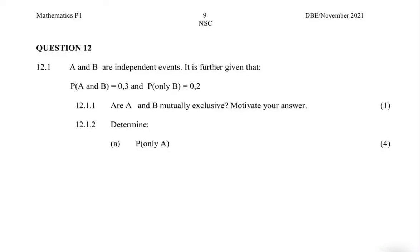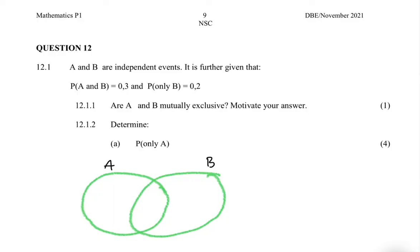A and B are independent events. The probability of A and B is 0.3 and the probability of only B is 0.2. Before we solve any problems, we need a Venn diagram — it makes things extremely easy. On the diagram: only B is 0.2, A and B is 0.3, only A we don't know so let's call it x, and the probability of neither A nor B we'll call y, outside the circles.